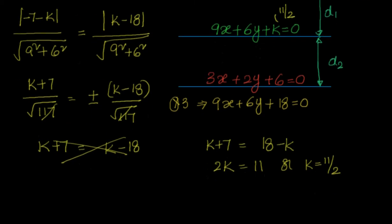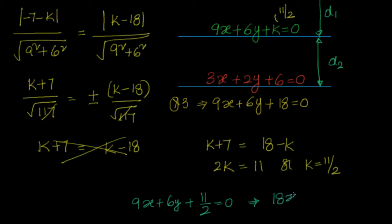So the value of k is 11 by 2. Once we know that, we can directly substitute it. The equation of the line which is midway between the first and third line is 9x plus 6y plus 11 by 2 equal to 0, or equivalently 18x plus 12y plus 11 equal to 0.